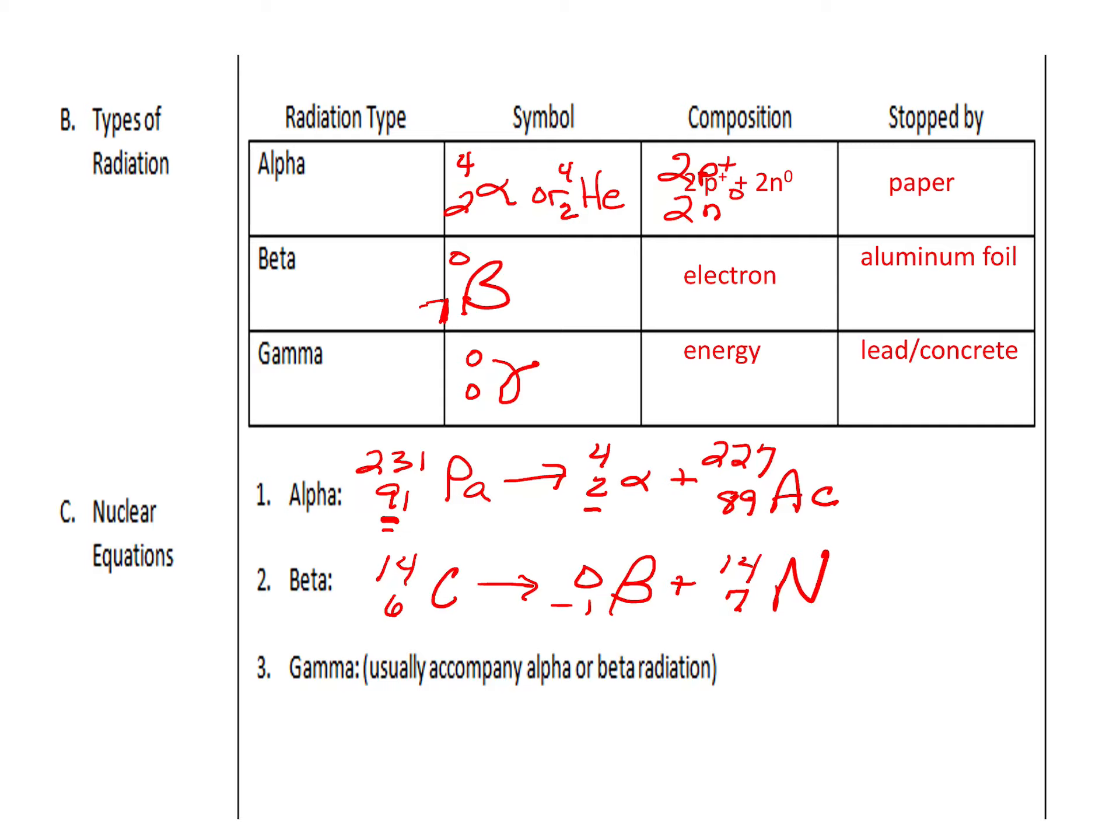Gamma radiation usually accompanies either alpha or beta because notice it is just energy. So, uranium is actually a good example of that. Uranium-238. And uranium-238, when it undergoes radioactive decay, it will release an alpha particle. It will also release gamma energy. And then, we have to figure out what element it will transmutate into. I usually start at the bottom. We have a 92 here, and we already have 2. So, we're going to need 90 more.